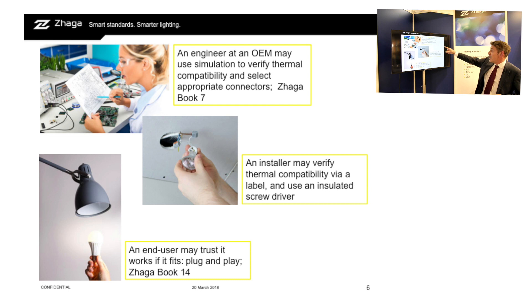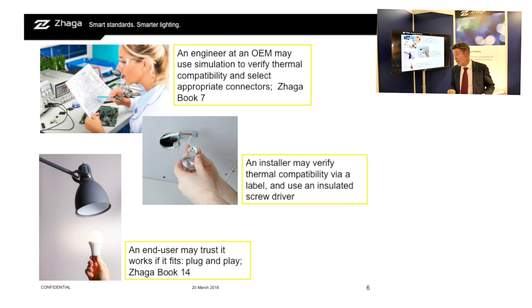And typically that is what we do in ZAGA book 7. It's interoperable, and we give an engineer at an OEM the tools to check interoperability and to make things actually work.